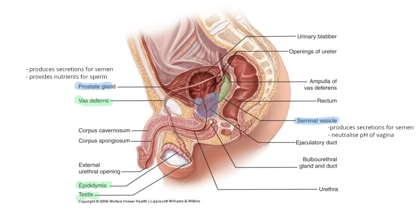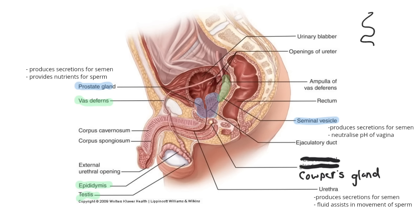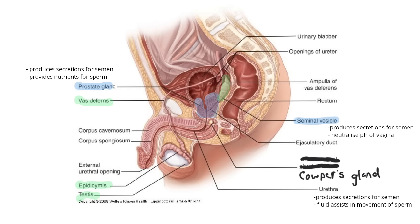The next gland is also called the Cowper's gland — that is an acceptable name. You also have two of these. The Cowper's gland's function is associated with producing a secretion for semen, but specifically the fluid assists in the movement of sperm. Sperm actually spiral when they swim rather than moving side to side, so they need a great environment to move in. The Cowper's gland produces a thicker alkaline mucus that sperm can swim through, supporting good motility.